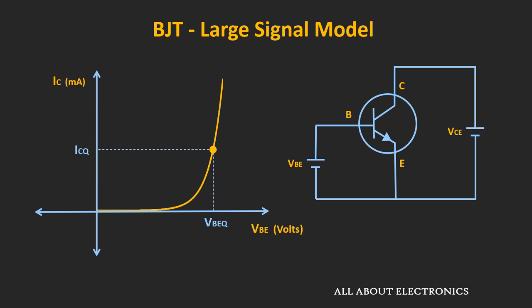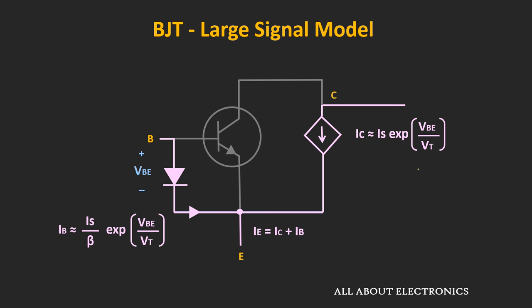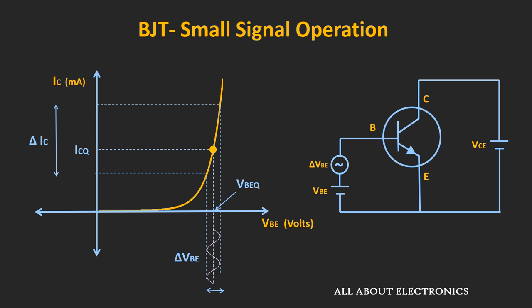During the discussion of the large signal model, we have already seen the IC vs VBE curve for the BJT. For some large signal voltage VBE, we get some collector current, where the subscript Q defines the biasing or operating voltages. When we apply some voltage VBE, the collector current IC is given by IC = Is · e^(VBE/VT), where Is is the saturation current and VT is the thermal voltage. Now on this large DC signal, a small perturbation or small AC signal is also added.